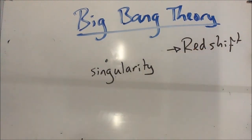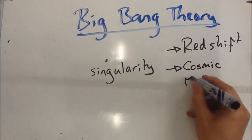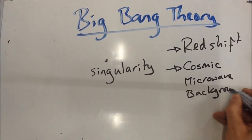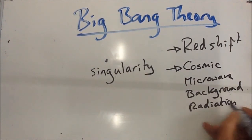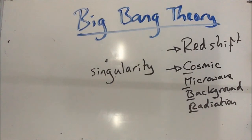Now, redshift is not the only evidence we have for this theory. We also have cosmic microwave background radiation — we call it CMBR for short. What that is, is the remains of the Big Bang, the echo of the Big Bang. Now, when the Big Bang happened, this rapid expansion, we theorize that huge amounts of energy would have been released in the form of gamma waves. And as the universe is expanding, the edge of the universe is expanding so, so quickly. Because of the Doppler effect and redshift — and if you want to look at redshift, check out the video on redshift — the Doppler effect means that these waves have been stretched out.